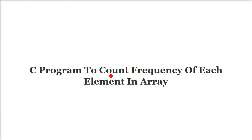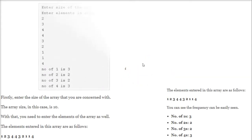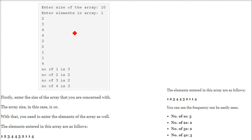C program to count frequency of each element in an array. So how are we going to make a program out of this? The program will first need to know the size of the array. Then, when numbers are entered in the array, how many times a number is repeated — that is the frequency.